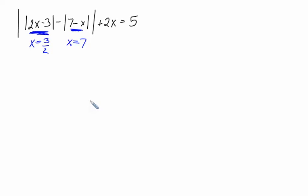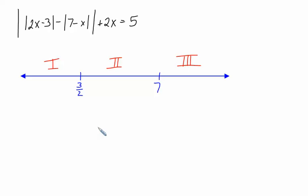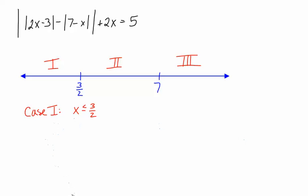Next, we will put those key numbers on a number line and identify the cases that are formed as a result. We are going to look at each of these three cases separately, figuring out how we remove the absolute values on those innermost items. Let's begin with case one, when x is less than or equal to 3/2.